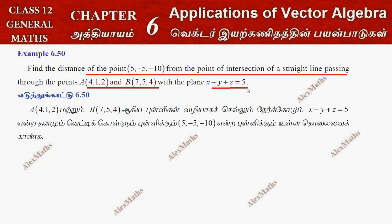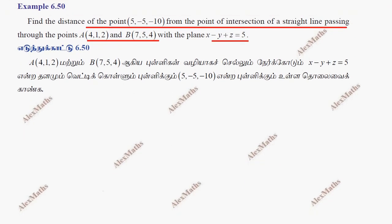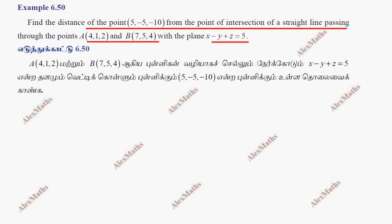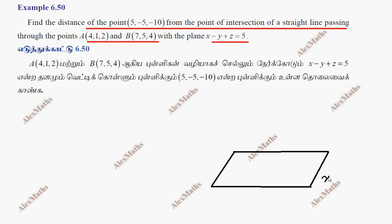If we look at the diagram of a plane, we can construct a plane equation and a side of the line. The plane equation is x minus y plus z equal to 5.